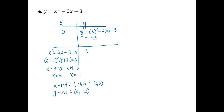Algebraically, finding the y-intercept is the easiest — we're just substituting 0 in for x and simplifying. Finding the x-intercepts requires us to solve different types of equations depending on what equation we're given, so it might be necessary to review a few of those methods. Let me know if you have any questions. Thank you.